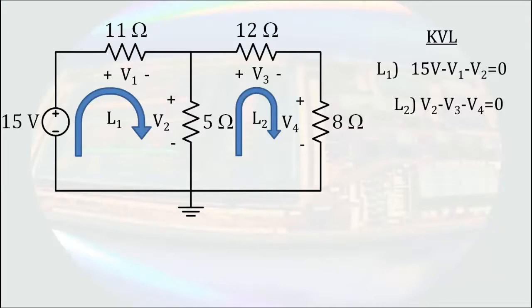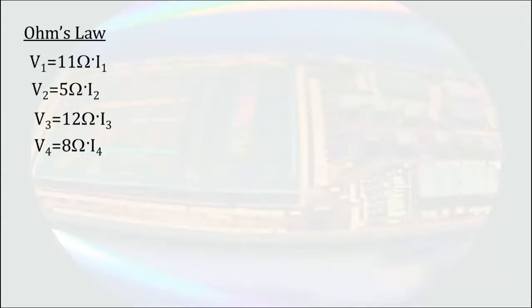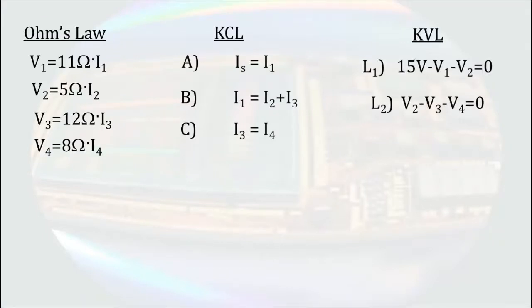Now we have all the equations that describe the currents and voltage relationships for our circuit. We have 4 equations from Ohm's Law, 3 equations from KCL, and 2 equations from KVL. That gives us 9 equations with 9 unknowns. The rest is algebra.